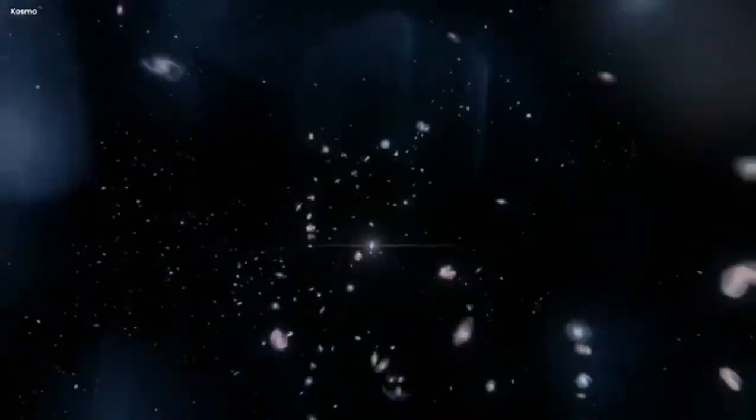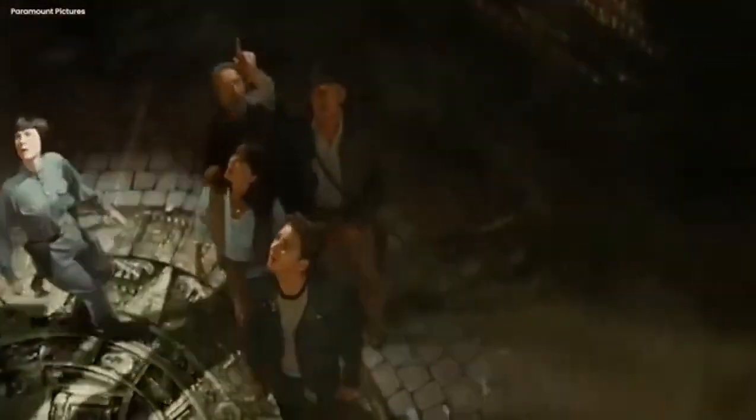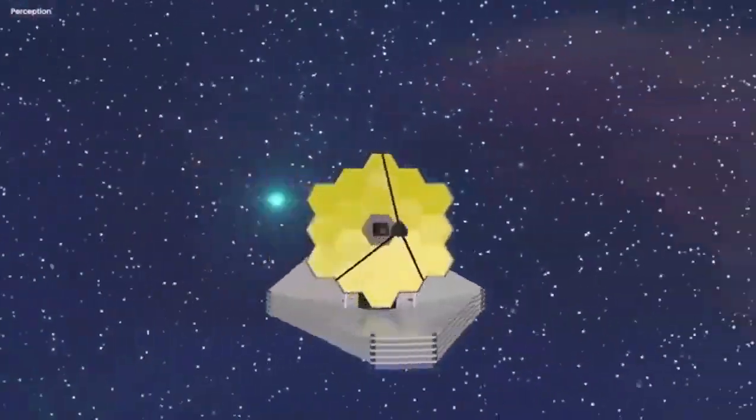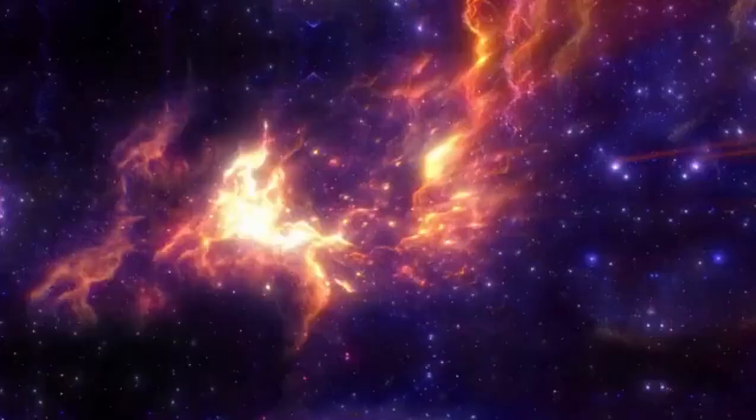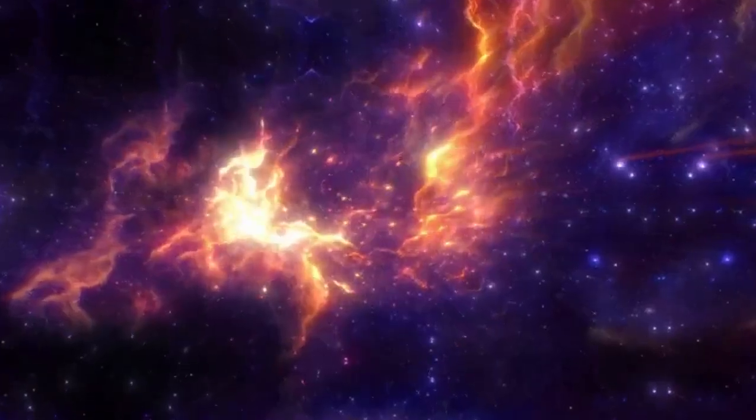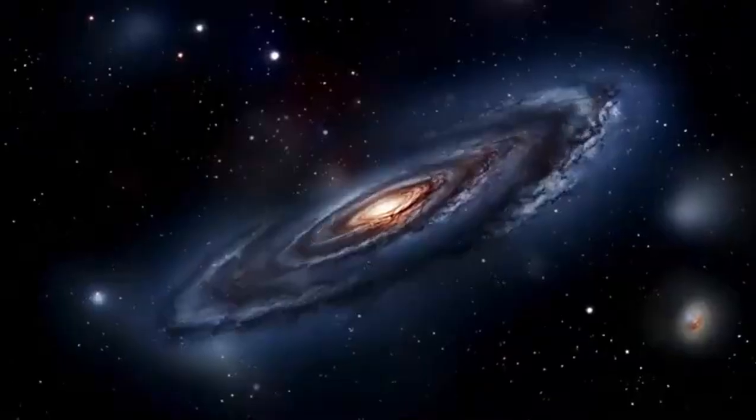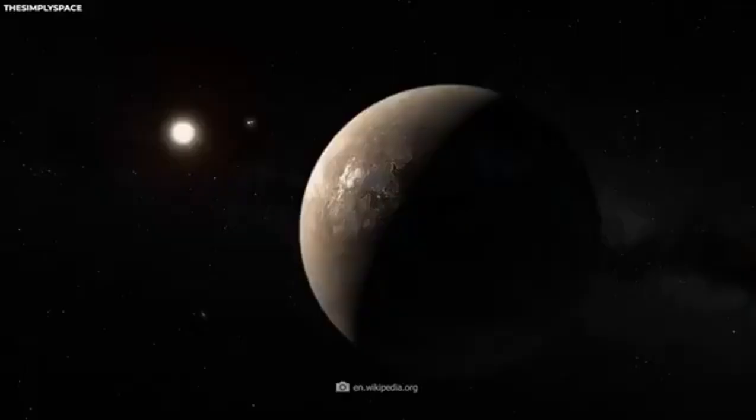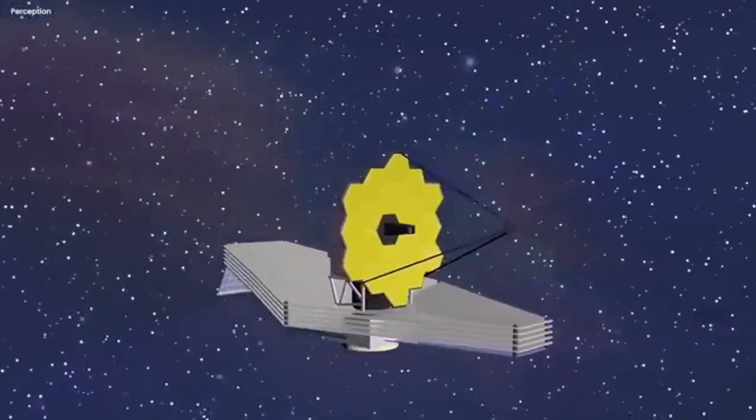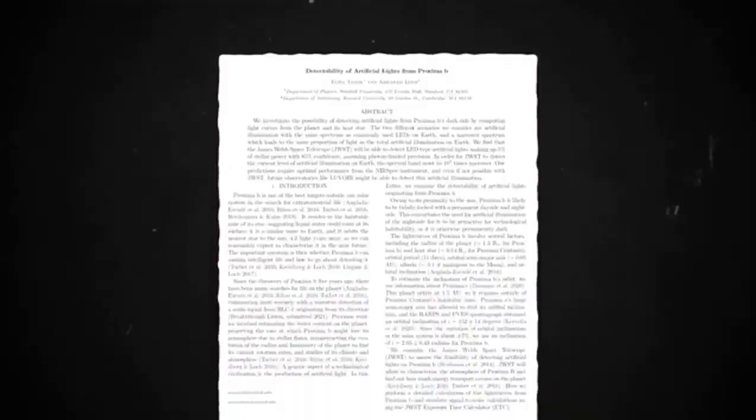Since the exoplanet was 20 times nearer to its star than Earth is from the Sun, Proxima B was believed to be tidally locked with a permanent day side and night side, similar to our Moon which faces Earth with the same side at all times. A hypothetical technological civilization on Proxima B might transfer heat and electricity from the day side to the night side using photovoltaic cells that generate electricity out of starlight. Subsequently, in a paper with Manasvi Lingam as one of the researchers, it was shown that significant coverage of the day side by solar panels could be detected with future telescopes.